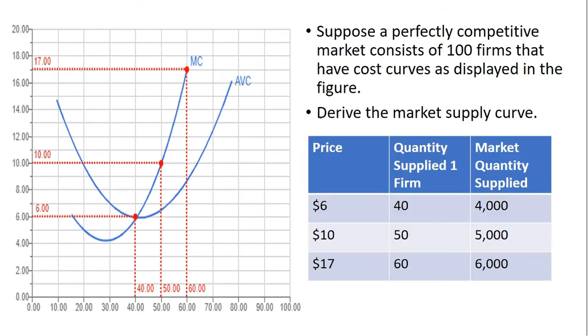So we're going to do this by constructing a table. This table will have various market prices and then the quantity supplied by the firm over here on the left, and then we'll get to the market quantity supplied.